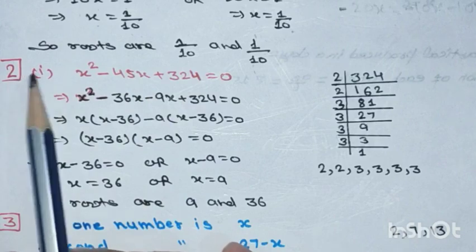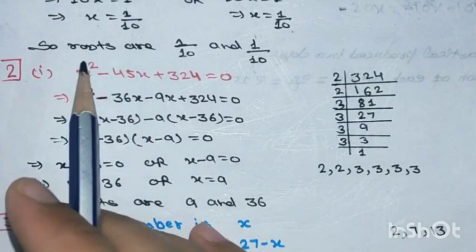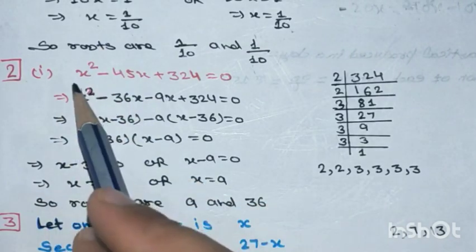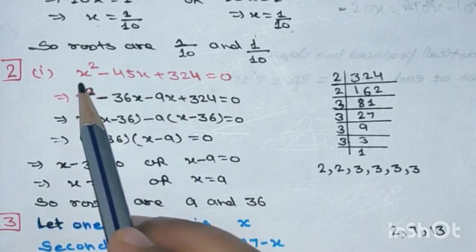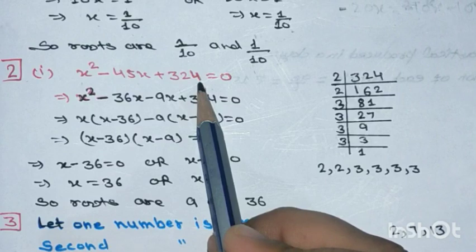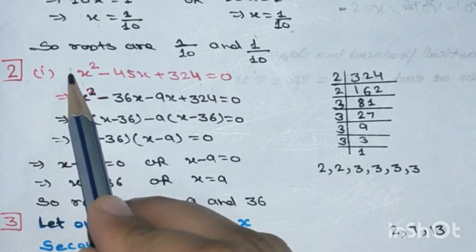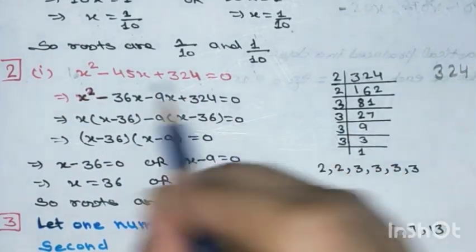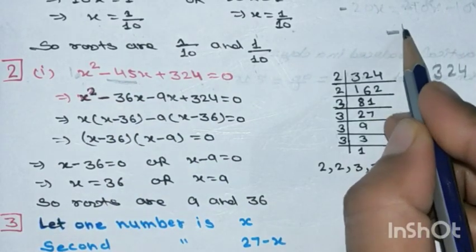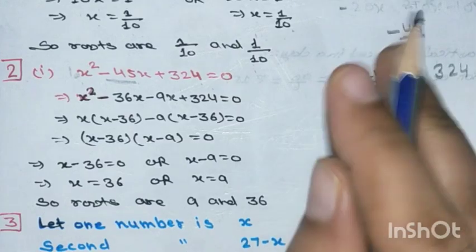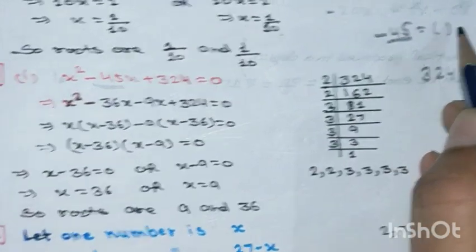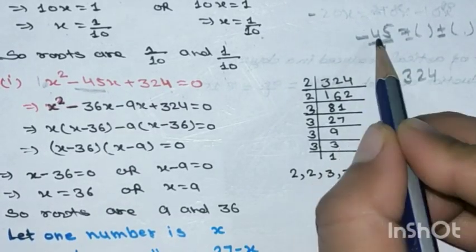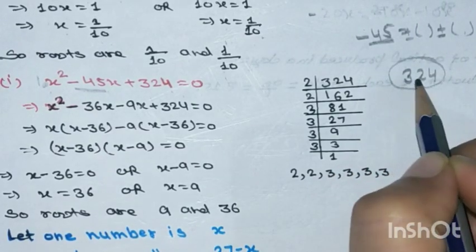Students, start writing from the beginning — how many marbles John has, how many Jayvanti has — then start from this step: x² - 45x + 324 = 0. The coefficient of x² is 1, so 1 × 324 = 324. We need to split -45 into two parts such that they add to -45 and multiply to 324.